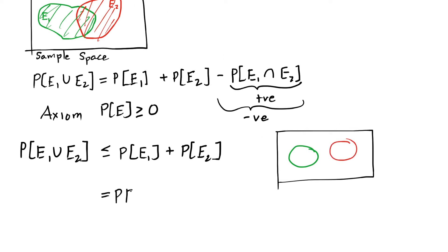If the two events don't overlap, we'll have that this probability is equal to the probability of e1 plus the probability of e2. And by don't overlap, we mean that the two events are disjoint.